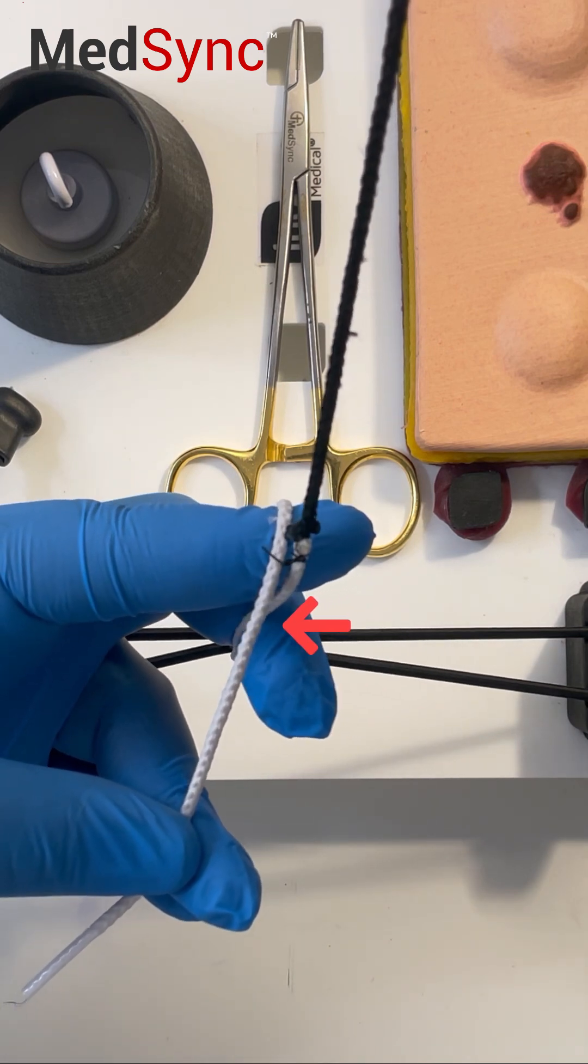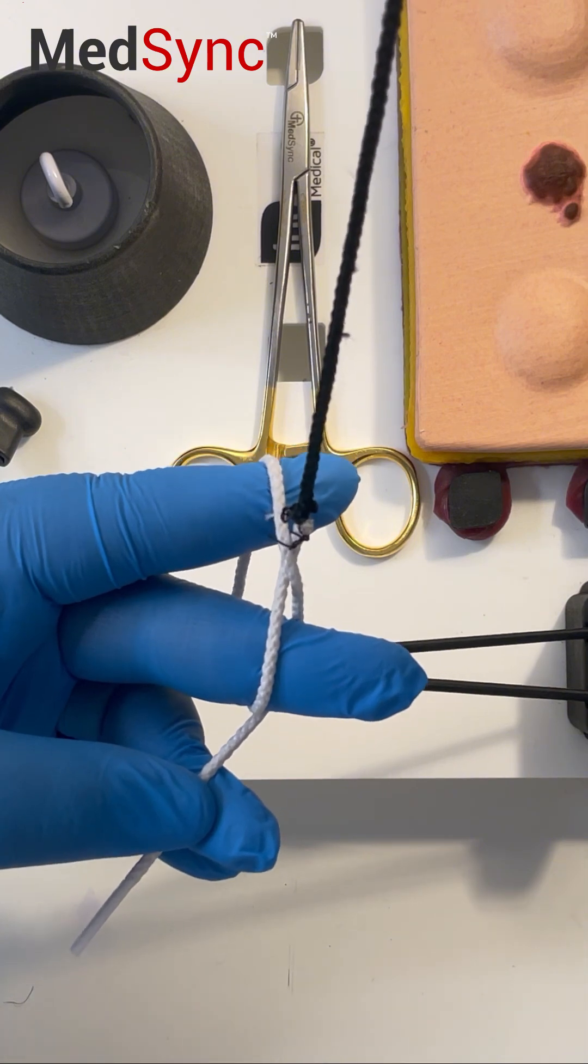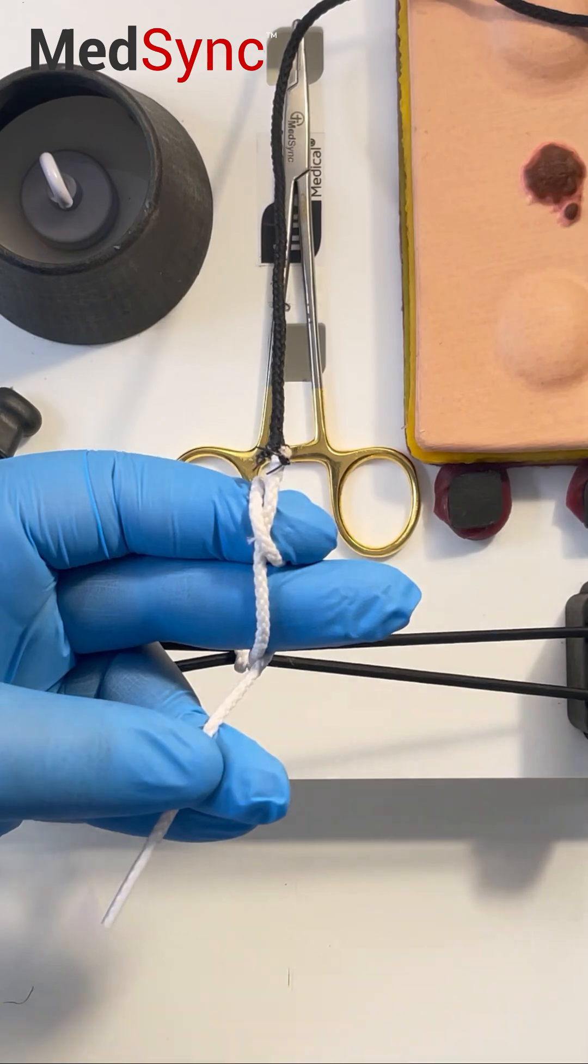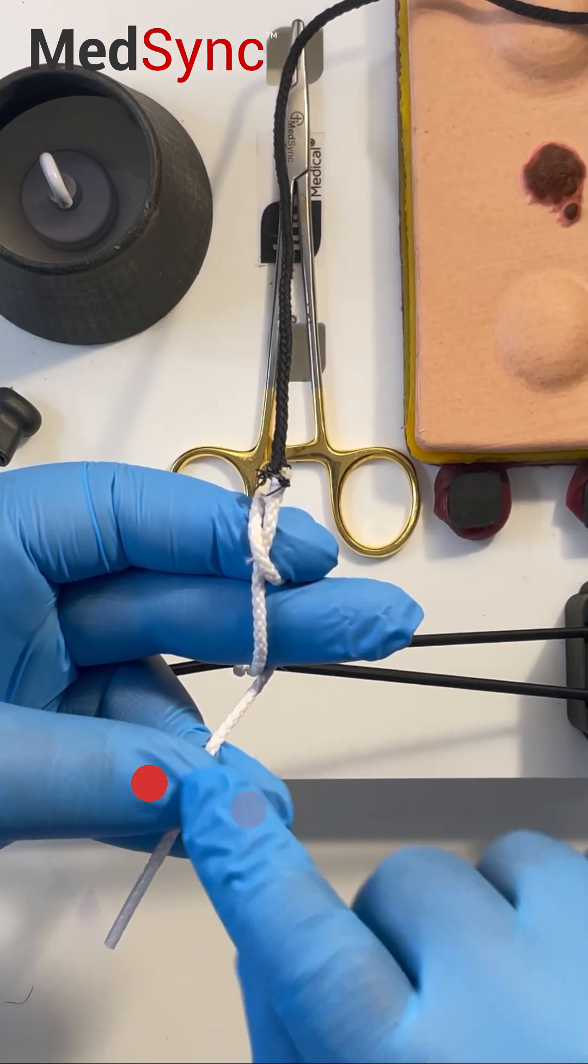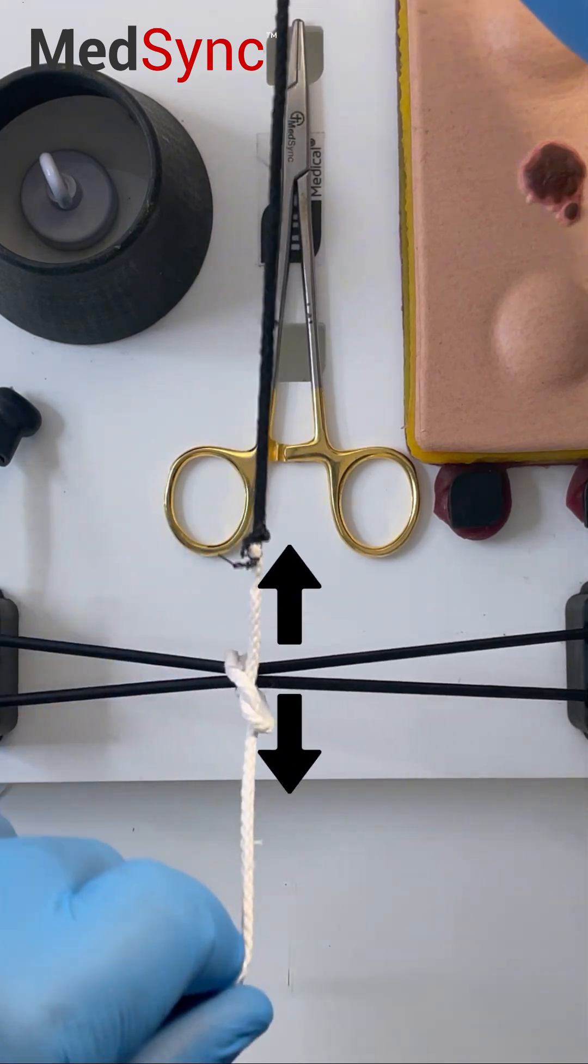Bend your middle finger over the long under the short. Squeeze it between your index and middle. Let go between your thumb and ring and pull the short suture through the loop.